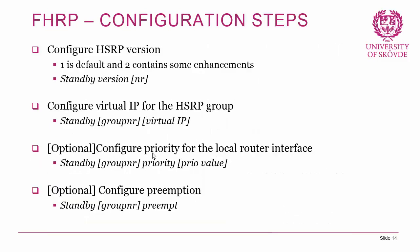For HSRP configuration: begin by setting the version with 'standby version [number]' — version 2 contains enhancements beyond this course's scope. Then configure the virtual IP using 'standby [group-number] [virtual-ip]'. To influence election, set priority with 'standby [group-number] priority [value]', and configure preemption with 'standby [group-number] preempt'. All of these are interface configuration commands.